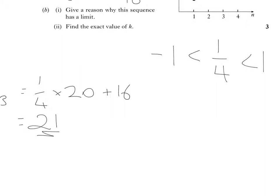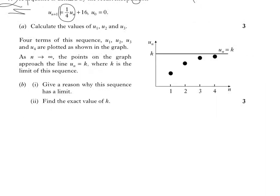Part C, part B, part 2, rather, find the exact value of K. By looking at the diagram, we can interpret K as being the limit. So, it's tending to that limit.